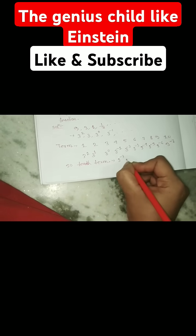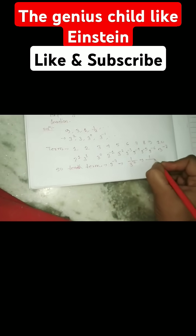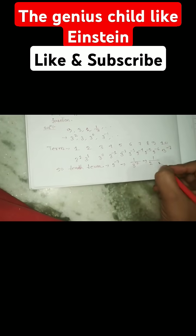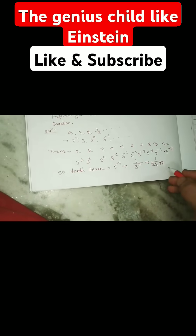Three to the power minus seven equals one by three to the power seven, which equals one by two thousand one hundred eighty-seven. That is the correct answer.